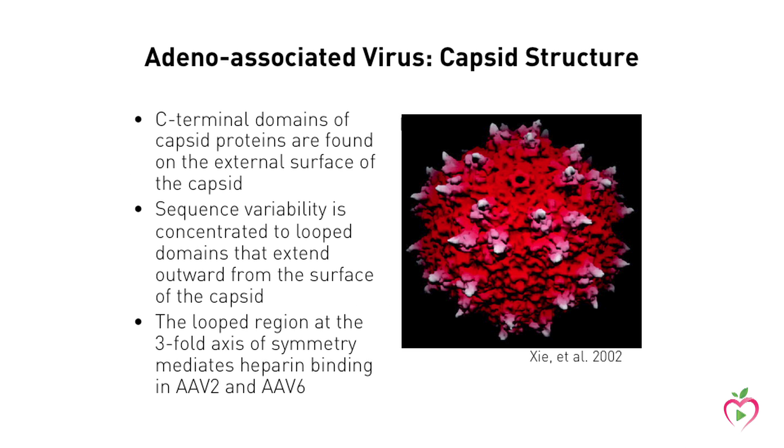The remarkable property of the AAV virus that is injected into the vascular system is that it can reach all the muscles of the body to deliver its gene cargo. The most efficient way to get a dystrophin gene into a cell appears to be to take advantage of the natural ability of viruses to get inside cells.